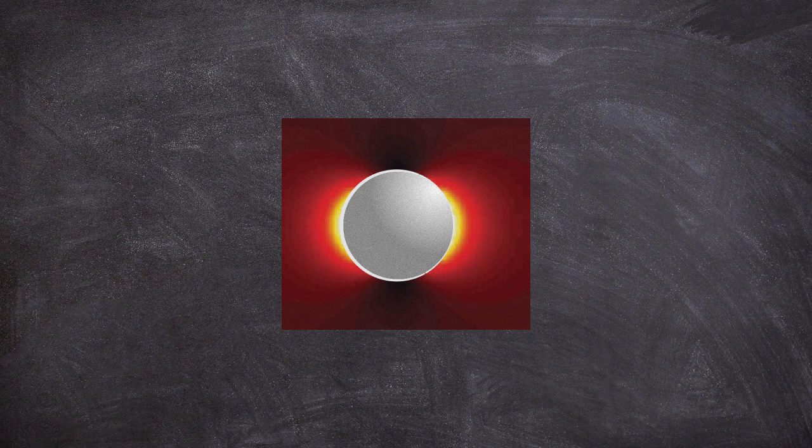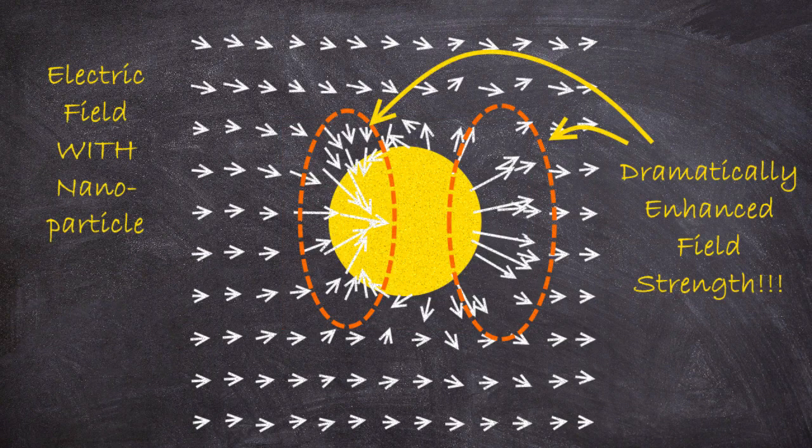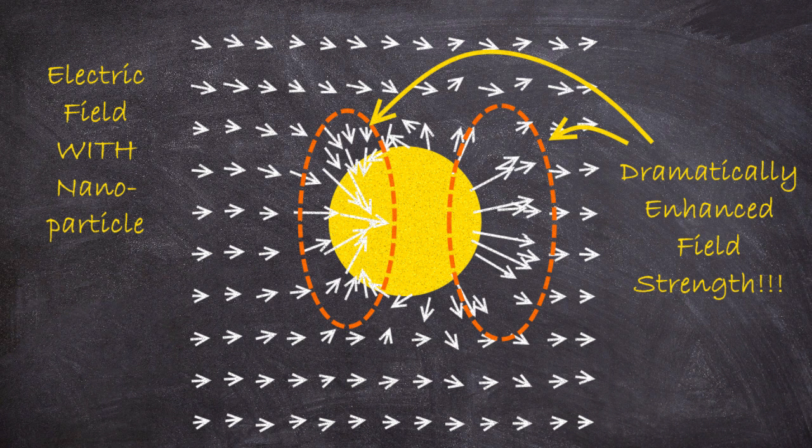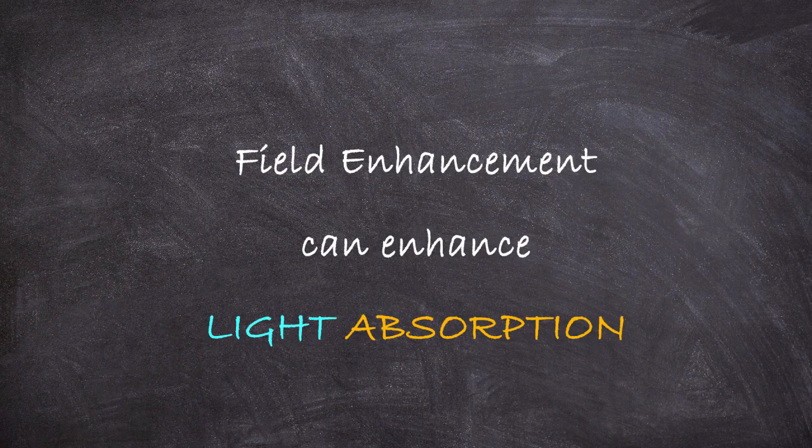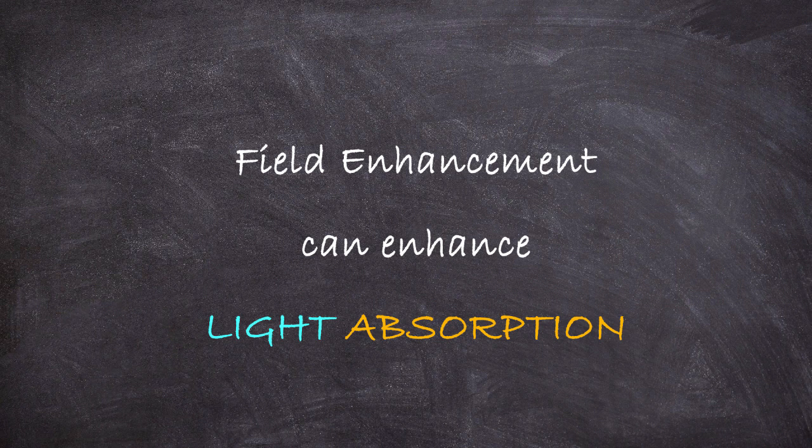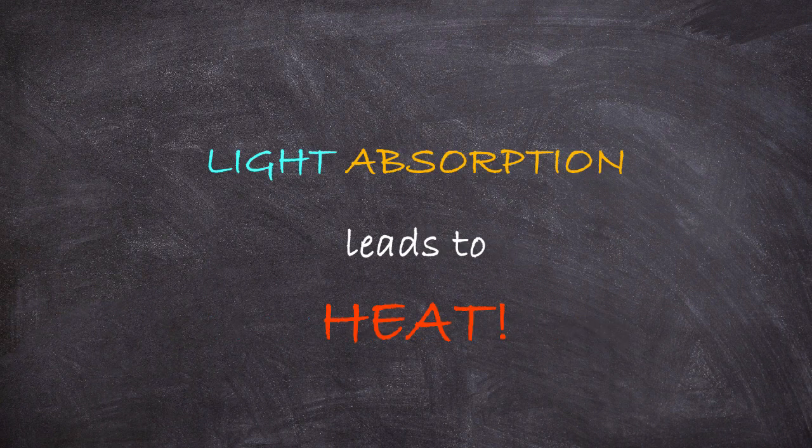One way you can exploit these properties is to basically recognize that they allow you to create hot spots of an electric field, concentrating it into a very small area around that nanoparticle. This concentration of the electric field can then also drive absorption of the light, which then leads to basically a localized heating effect.